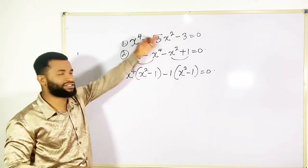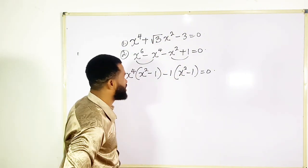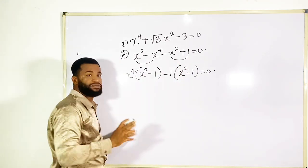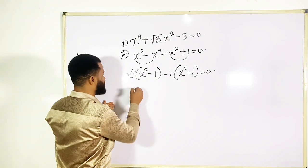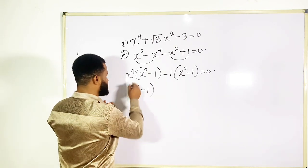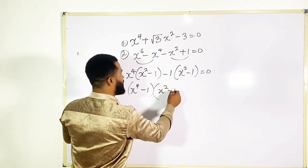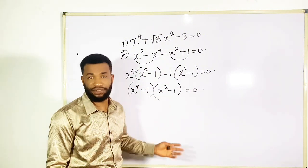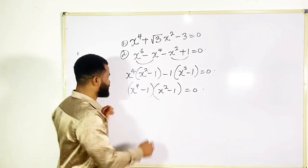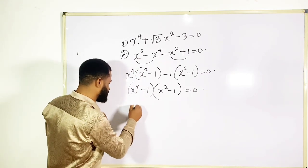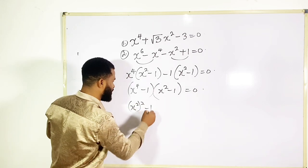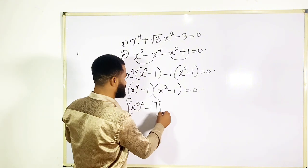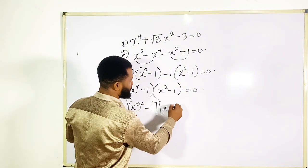If I open this bracket I'll still get the original equation, so everything is fine. For that reason I'm going to say x raised to power four minus one, and also x raised to power two minus one, equal to zero. At this point I'm going to apply the difference of two squares. So for this I'm going to have x raised to power two, all raised to power two, minus one.